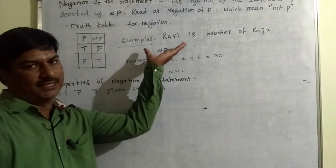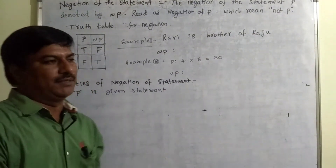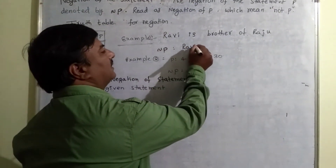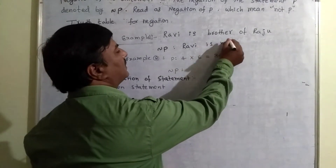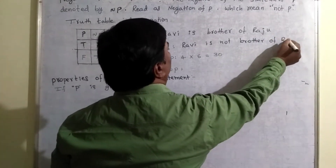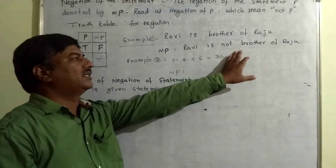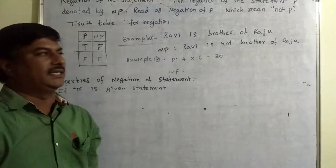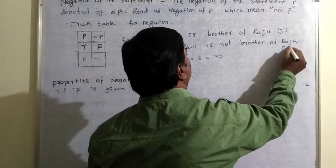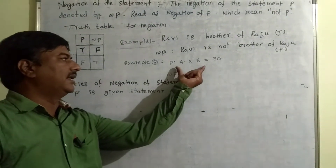Let us see two examples related to negation. The first example: P is 'Ravi is the brother of Razum.' The negation of P means 'Ravi is not the brother of Razum.' We are simply attaching 'not', giving the opposite or contradictory sentence. If 'Ravi is the brother of Razum' is a true statement, then its negation is also a valid statement.